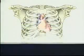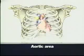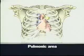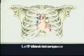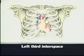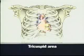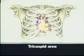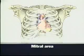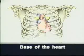You can hear S1 and S2 in the aortic area in the right second interspace close to the sternum, the pulmonic area in the left second interspace close to the sternum, the left third interspace, the tricuspid area in the left fourth and fifth interspaces, and the mitral area at the apical impulse. The aortic and pulmonic areas together are sometimes called the base of the heart.